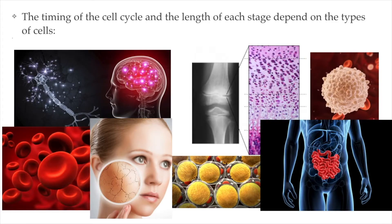Let's talk about the timing of cell division in our body, because even though we're constantly replacing our body cells, the replacement does not happen on an equal timeline. To replace the cells in our stomach lining, intestine, and gastrointestinal tract, it takes about one to three days, because this area of our body is under constant stress — we have food moving right through it. Our skin gets replaced every 20 days.